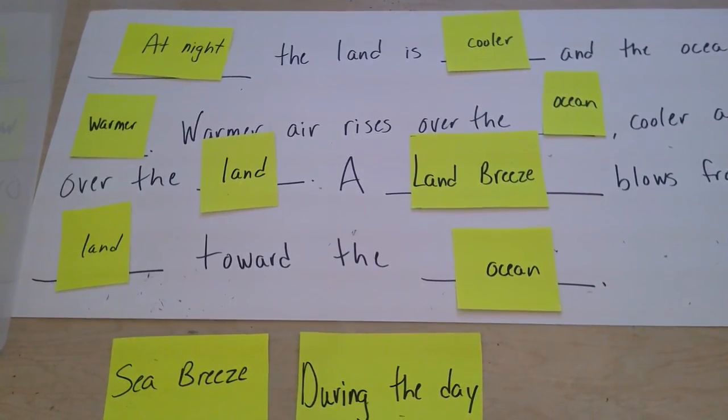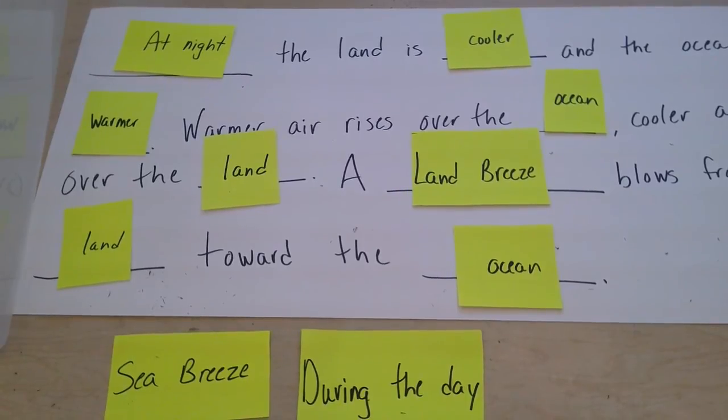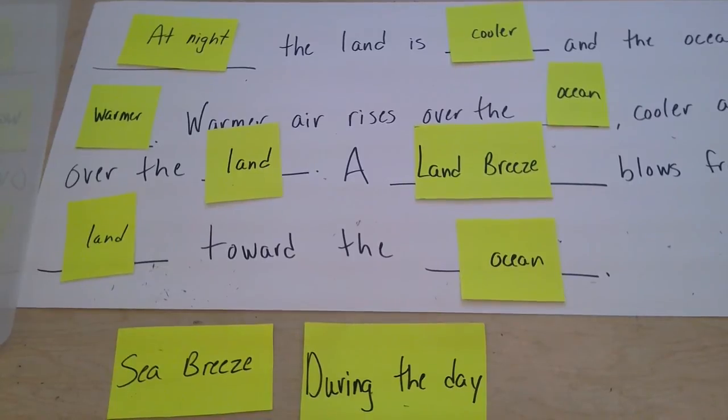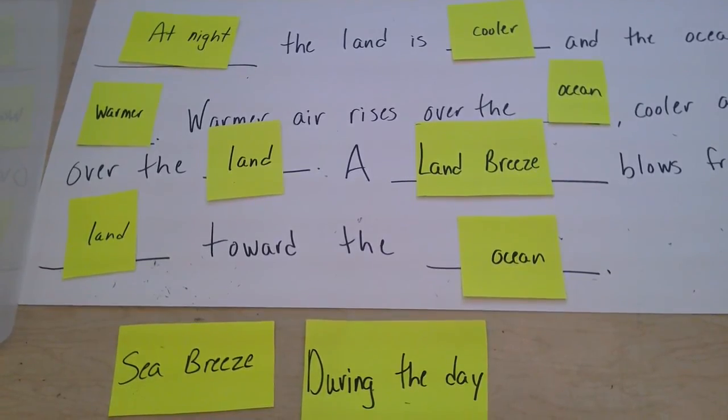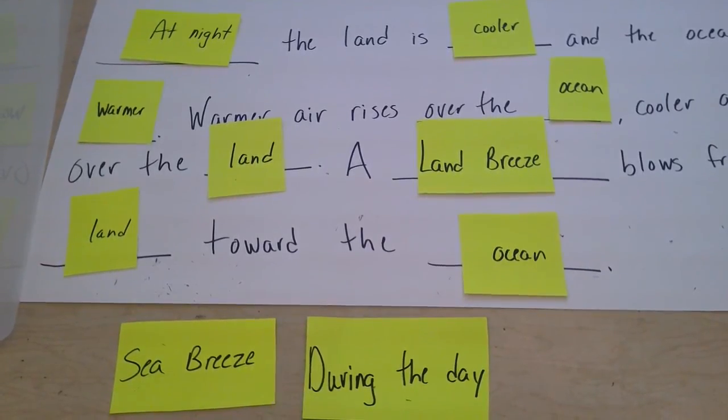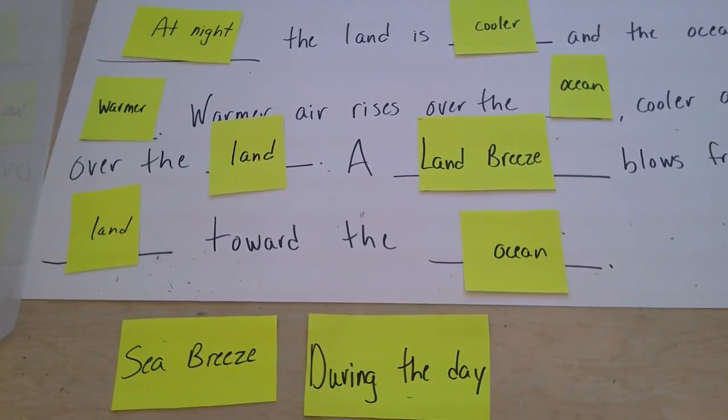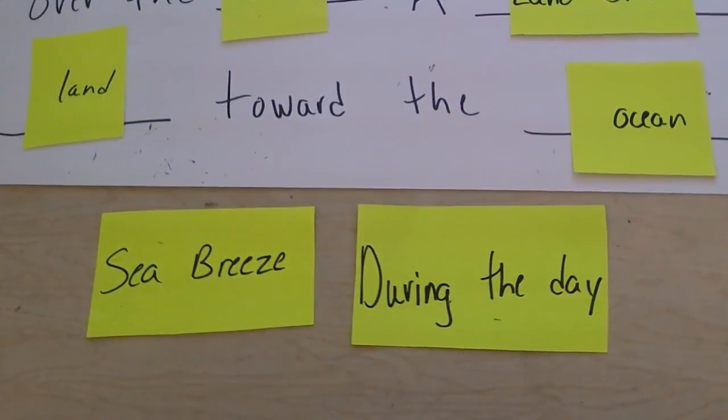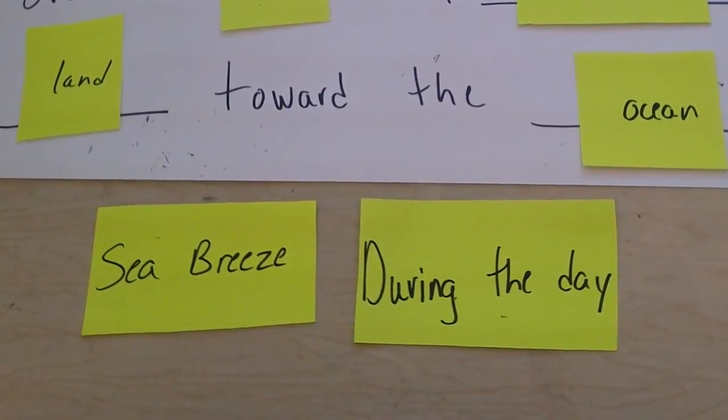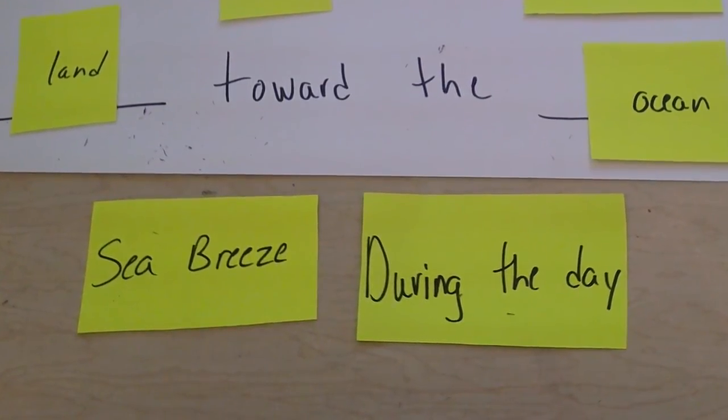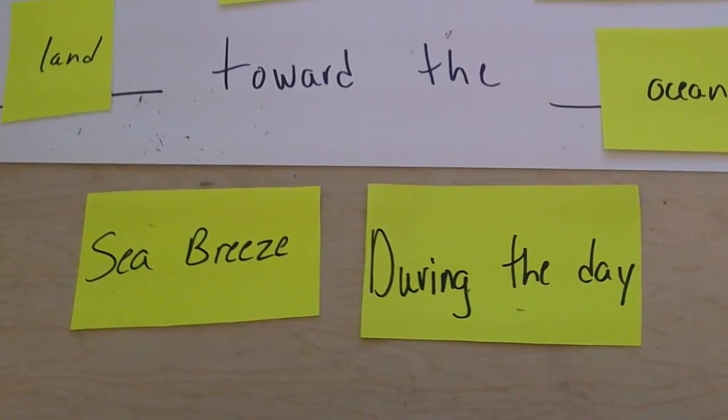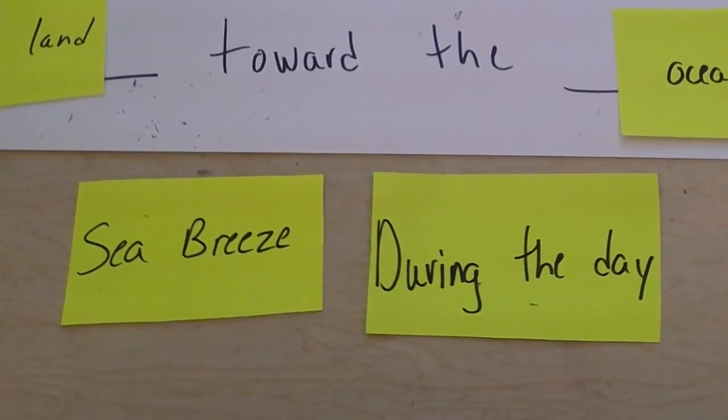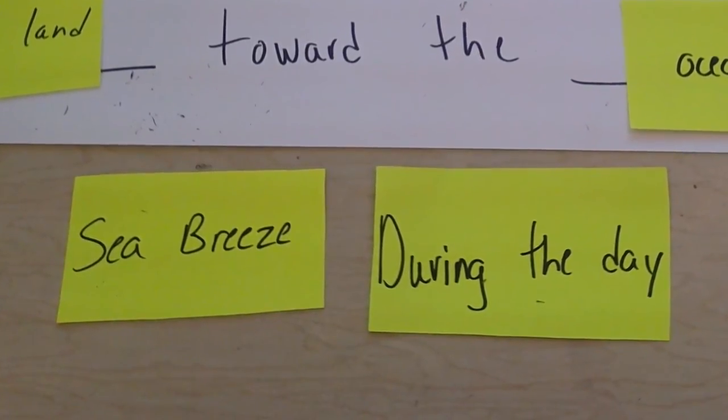However, if you trade at night for during the day, then you have to switch all of the words, because during the day, the land is warmer, and the ocean is cooler, and so on. So students should find themselves swapping the words and recognize that these are opposite phenomena. When they have filled in all the blanks, they will find that they have two pieces of paper left over. It will either say sea breeze and during the day, or it will say land breeze and at night. That helps them remember that those two things go together.